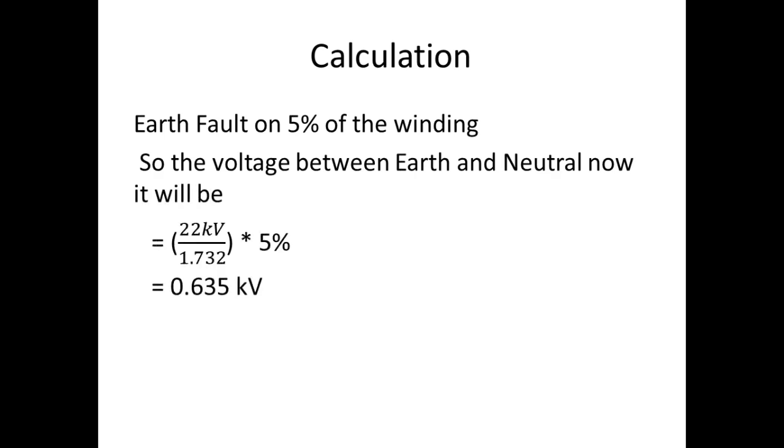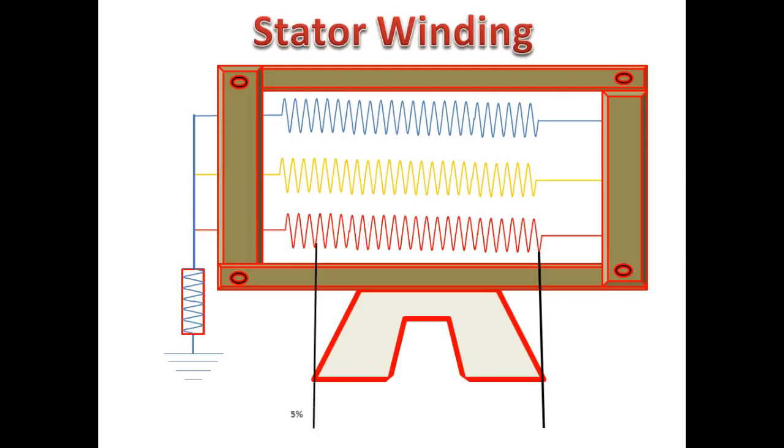When we check across this point, we will get 0.635 kilovolts. For this 95% of fault, it is clear that fault detection starts from 5% of the winding to 100% of the winding, so it covers only 95% of the winding.